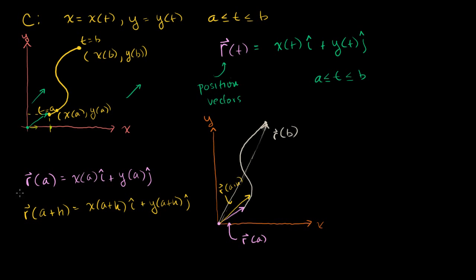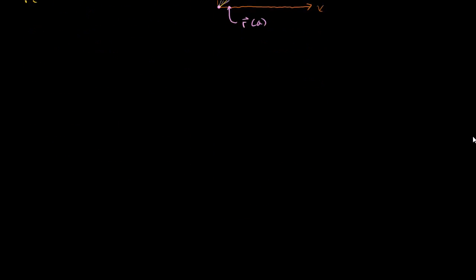In the last video, we hopefully got a respectable understanding of how a vector-valued function works — specifically a position vector-valued function that is, in some ways, a replacement for our traditional parametrization to describe a curve. What I want to do in this video is get a gut sense of what it means to take the derivative of a vector-valued function, in this case with respect to our parameter t.